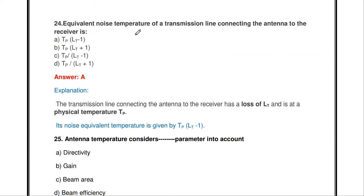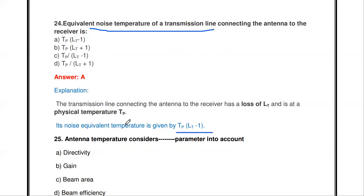Next question: what is the equivalent noise temperature of a transmission line connecting antenna to receiver? The relation is Tp(Lt − 1), where Tp is the physical temperature of the antenna and Lt is the transmission line loss. So the noise equivalent temperature of the transmission line is Tp(Lt − 1).